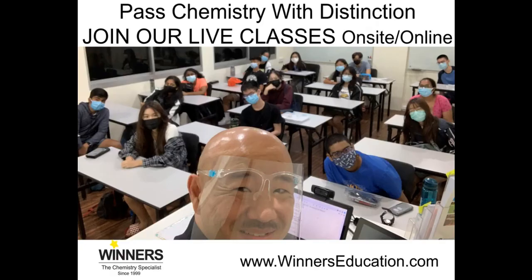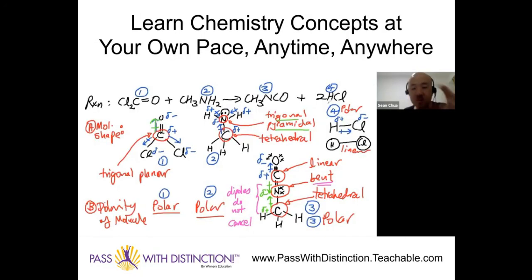If you'd like to join my live chemistry classes and revision workshops, go on to winnerseducation.com and find out how you can score distinction for chemistry on a consistent basis, either in our center or online via Zoom. If you want to check out my online school, go on to passwithdistinction.teachable.com. You'll be able to learn chemistry concepts at your own pace and anywhere in the world, topic by topic. This is Sean Chua from Winners Education to your distinction in chemistry.